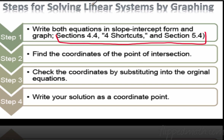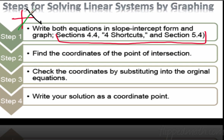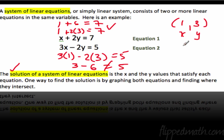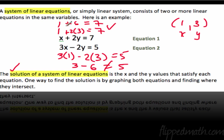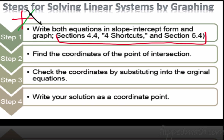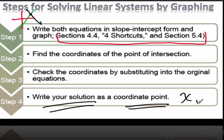You find the coordinates of the point of intersection. When you graph these two lines, they intersect somewhere, and you find the coordinates of that point. Then we check the coordinates by substituting into the original equations. You're finding the point that is on each line at the same time — the point that satisfies both equations at the same time. Write your solution as a coordinate point, x always goes first and y goes second.